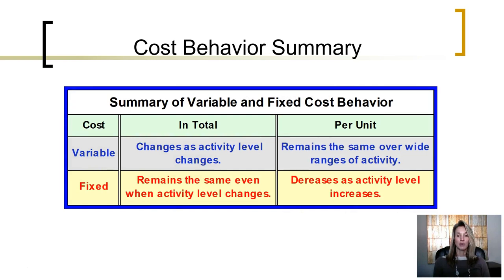Here is a summary of variable and fixed cost behavior. Variable costs in total change as the activity level changes, but on a per-unit basis, variable costs stay the same. Fixed costs in total remain the same even when the activity level changes. On a per-unit basis, fixed costs decrease as the activity level increases.